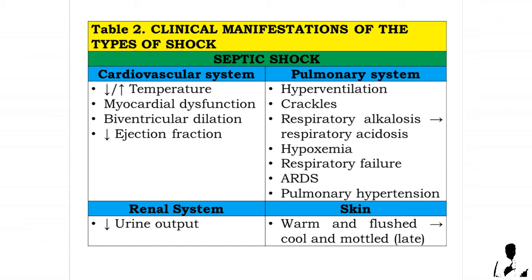ventricular dilation, and decreased ejection fraction. Pulmonary system: hyperventilation, crackles, respiratory alkalosis that may lead to respiratory acidosis, hypoxemia, respiratory failure, acute respiratory distress syndrome, and pulmonary hypertension. Renal system: decreased urine output.